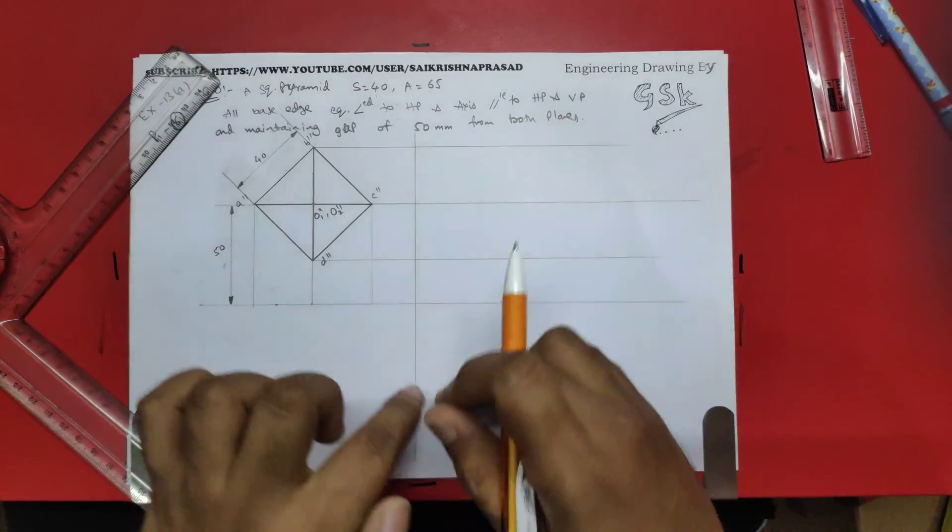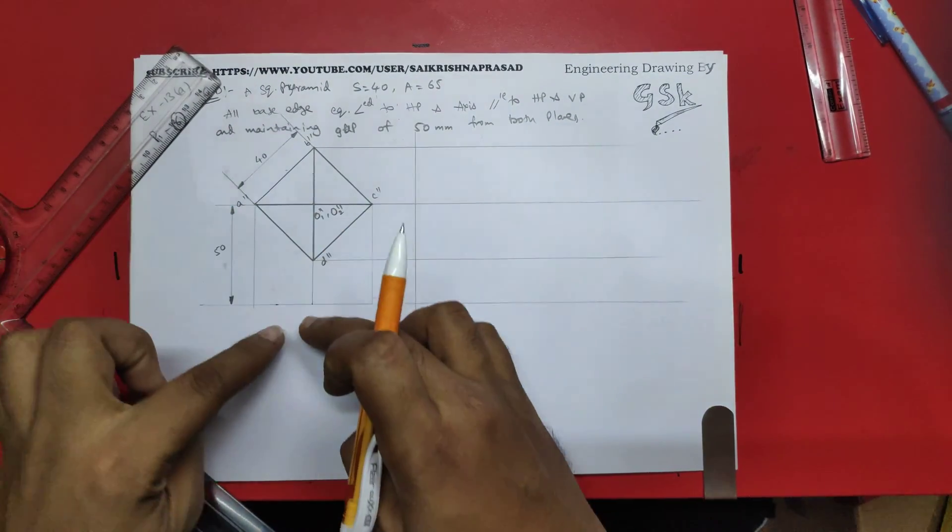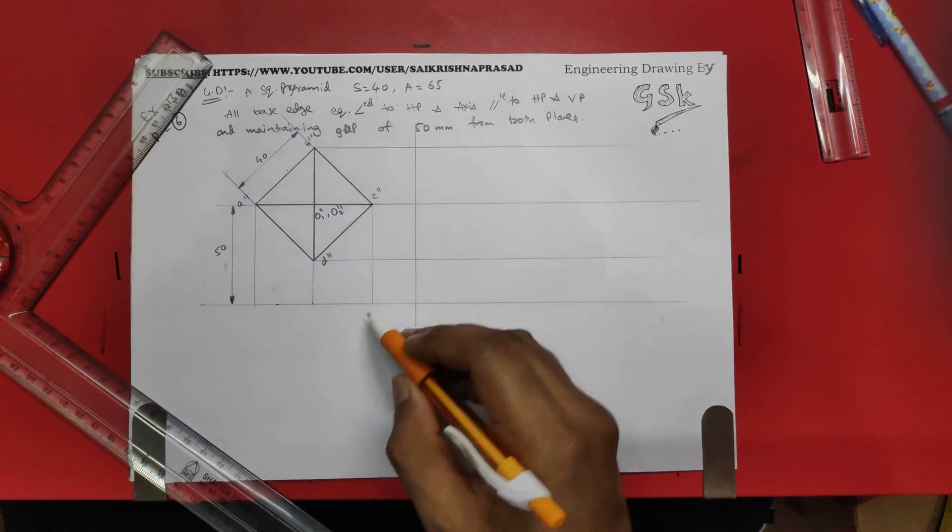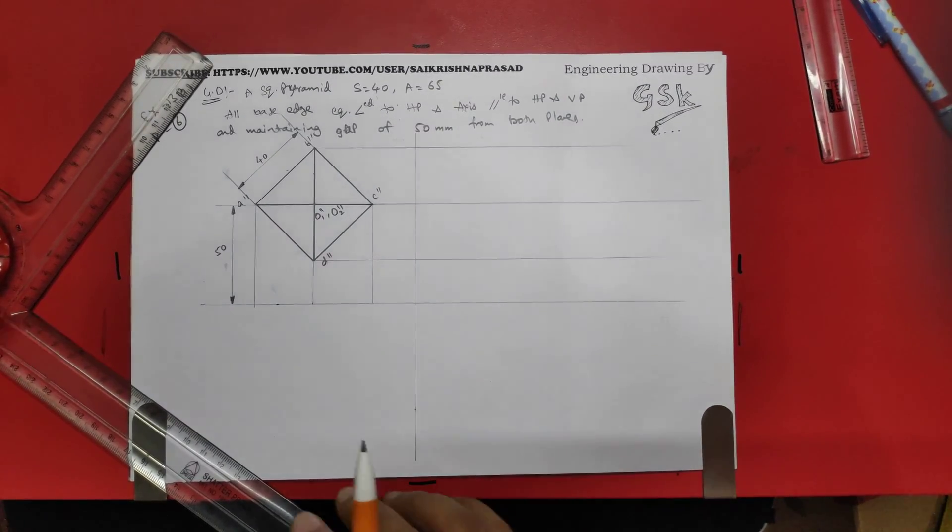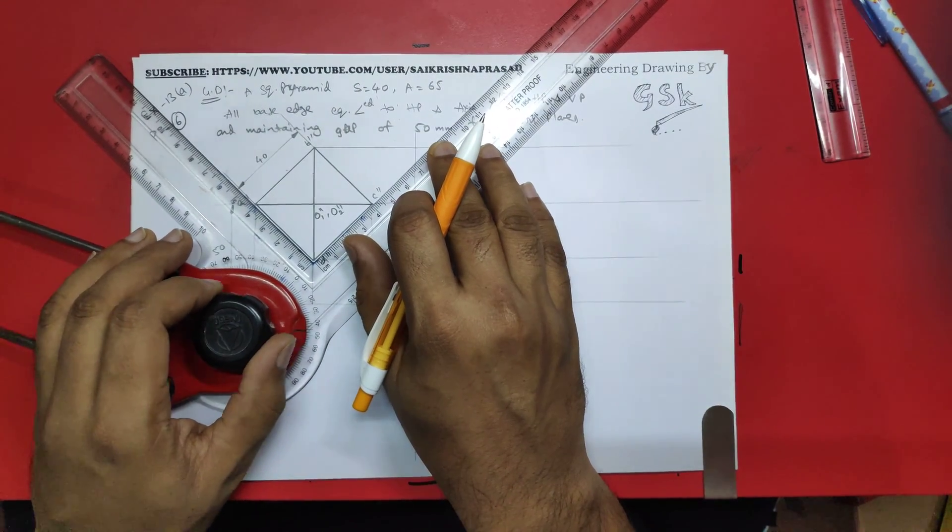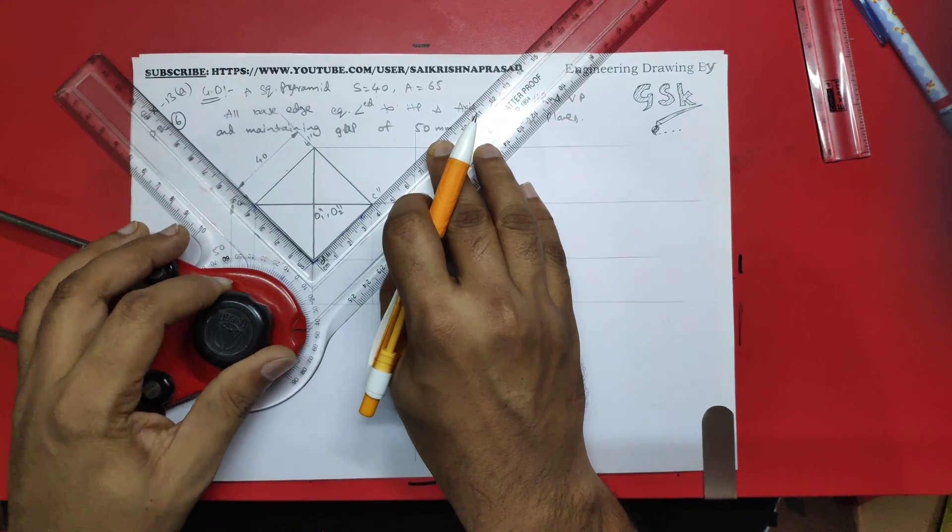For projecting from side view to the top view or other views, I will be taking the 45 degrees line, or else you can follow the arc method or else a diagonal line from here and straight like this. But the most convenient over here is the 45 degrees line for this type of problems.